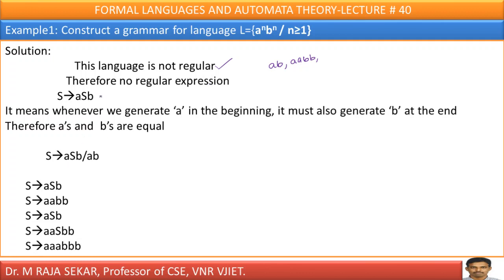Let me say S goes to a, S, b. What does it mean? Whenever I generate a, I must also generate equal number of b's. It means whenever we generate a in the beginning, it must also generate b at the end. Therefore, a's and b's are equal. Let me say S goes to aSb or ab.